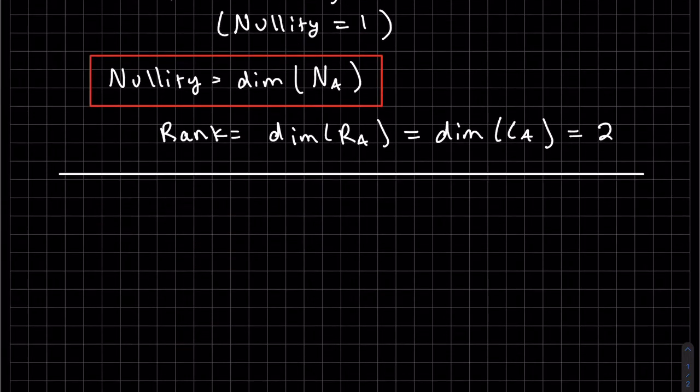So let's write out some notes. The dimension of the column space of A and the dimension of the row space of A are equal.